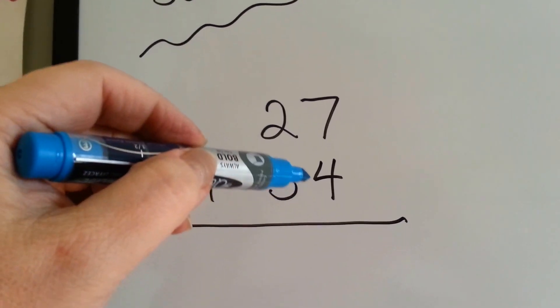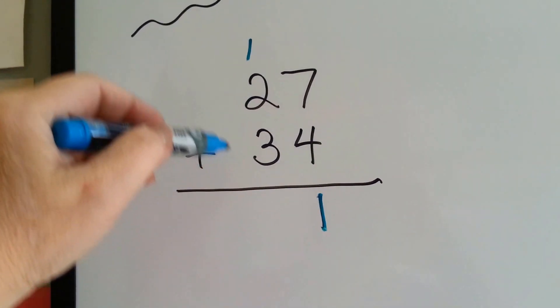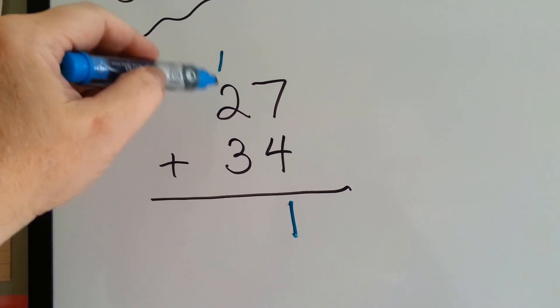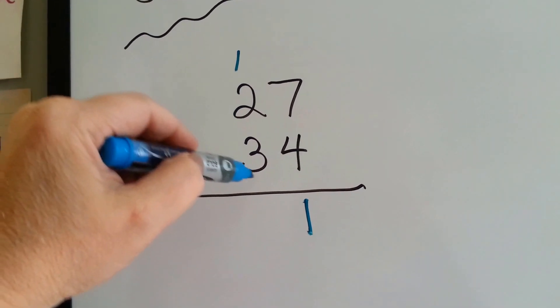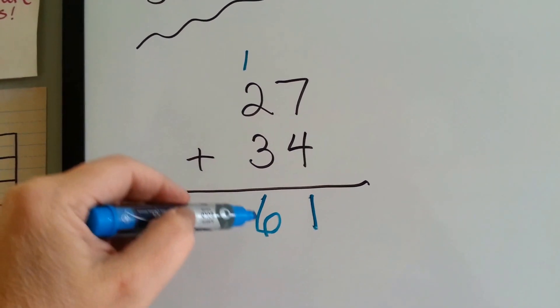7 plus 4 is 11. We carry the 1. Put the 1 down. 1, 2, 3, 4, 5, 6. 27 plus 34 is 61.